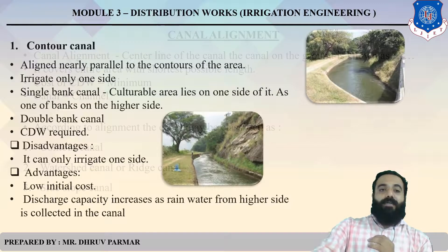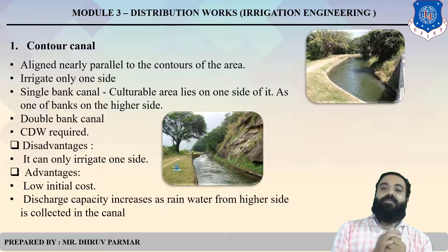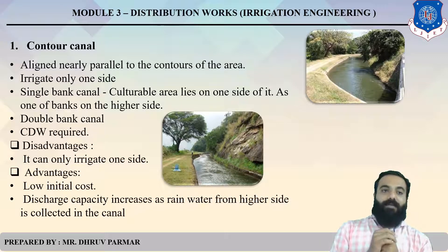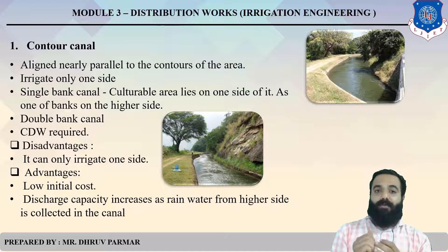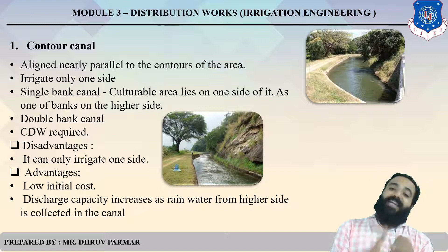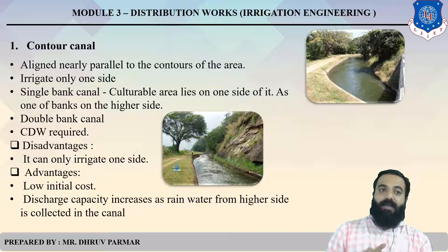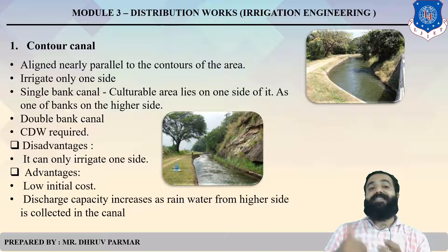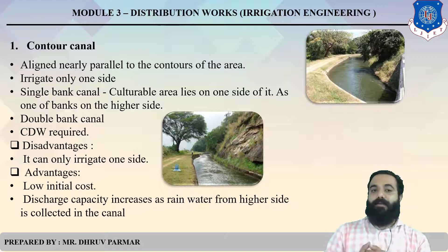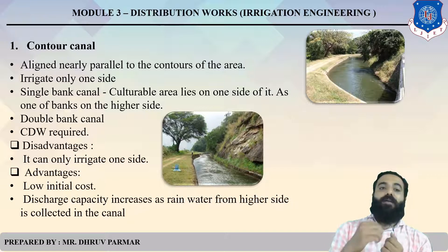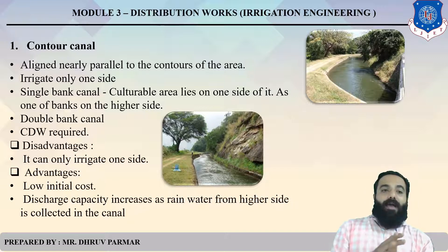First, what is a contour canal? A contour canal is one whose alignment is parallel to the contour line or contour of the area. It irrigates only one side — otherwise called a single bank canal, where the culturable area lies on one side at the higher bank.